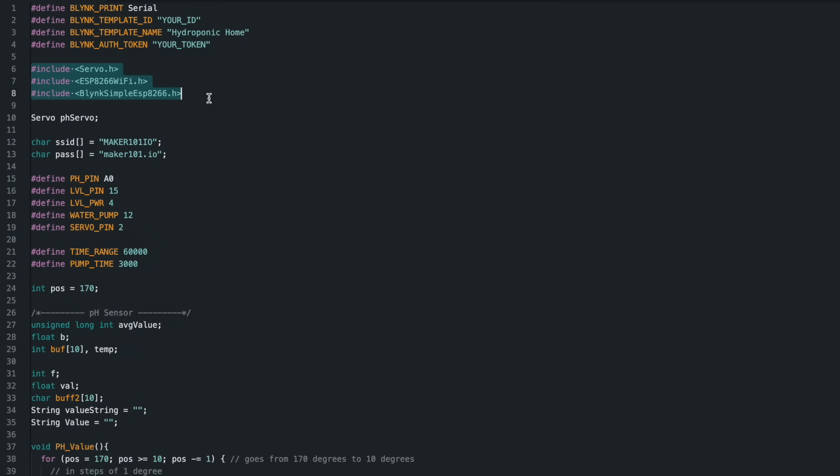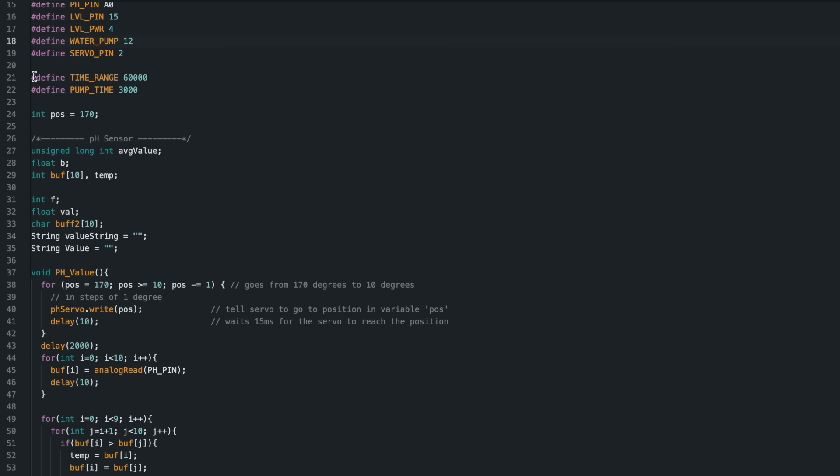Then install the necessary libraries used in the code. Define your Wi-Fi network information, then define the pins to which the components are connected. Define how often the system will be switched on and how long the pump will be activated. For now, the system is activated every 60 seconds and the pump runs for 3 seconds.